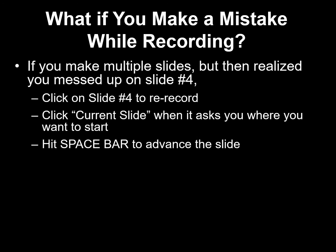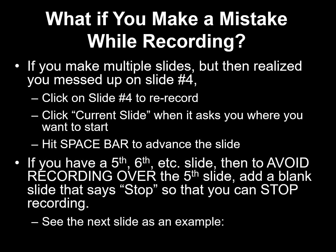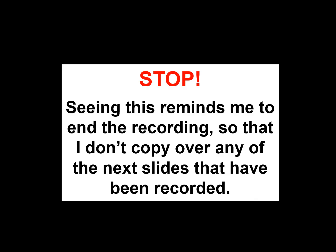You might be asking: what if I make a mistake while I'm recording? If you make multiple slides but then realize that you messed up on, say, slide number four, you can click on slide four to re-record it. You can then click 'current slide' when it asks you where you want to start — if you click 'beginning,' it's going to copy over everything you've done before. So be sure that you click on current slide, then you can hit the space bar to advance the slide. If you have a fifth, sixth, etc. slide that follows after that fourth one, then to avoid recording over the fifth slide, add a blank slide that says 'stop' so that you can stop recording when you finish slide number four. I always put a stop sign like this — seeing this reminds me to end the recording so that I don't copy over any of the next slides that I have already recorded.